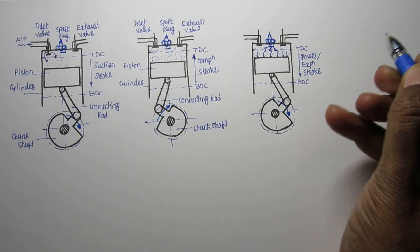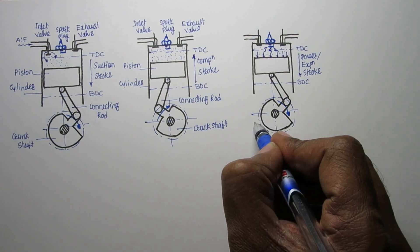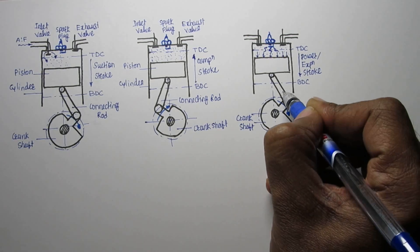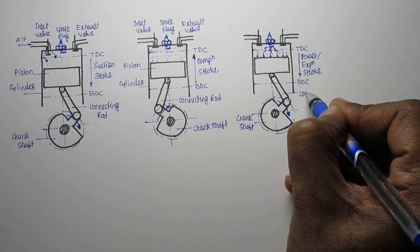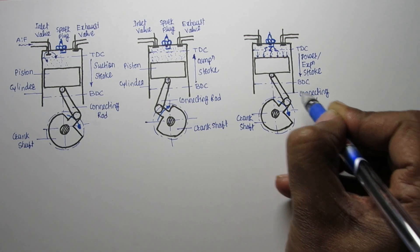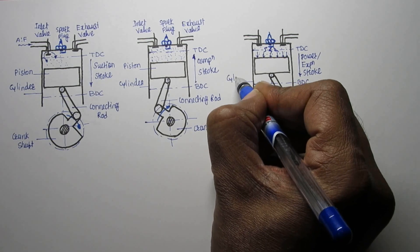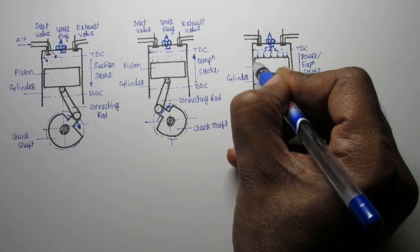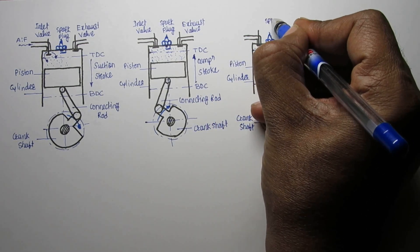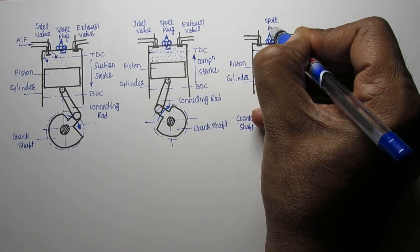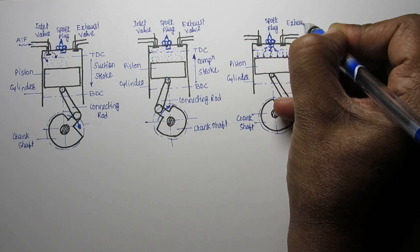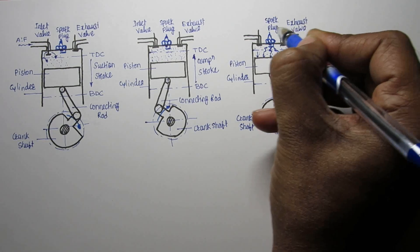Label the remaining parts: crankshaft, connecting rod, cylinder, piston, and the spark plug which is active in the power stroke. The exhaust valve remains closed and the inlet valve also remains closed during the power stroke.